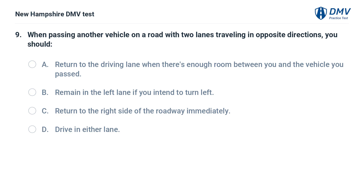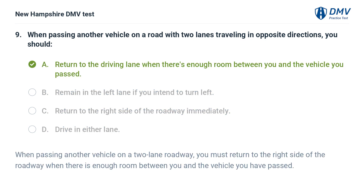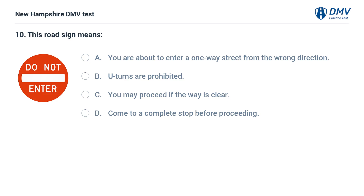When passing another vehicle on a road with two lanes traveling in opposite directions, you should: A) return to the driving lane when there's enough room between you and the vehicle you passed, B) remain in the left lane if you intend to turn left, C) return to the right side of the roadway immediately, D) drive in either lane. The answer is A. When passing on a two-lane roadway, you must return to the right side of the roadway when there is enough room between you and the vehicle you have passed.